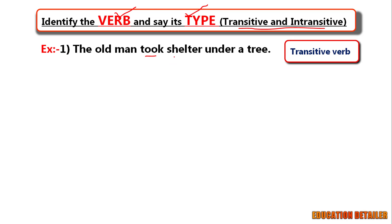Here tech is a transitive verb because it has an object to make sense. Next one.